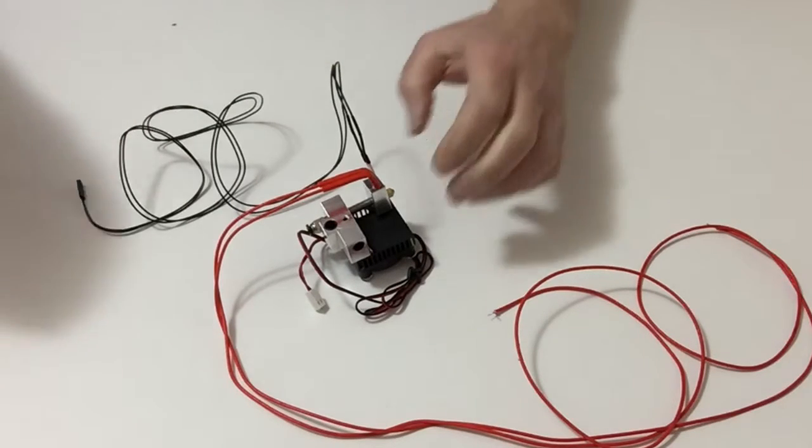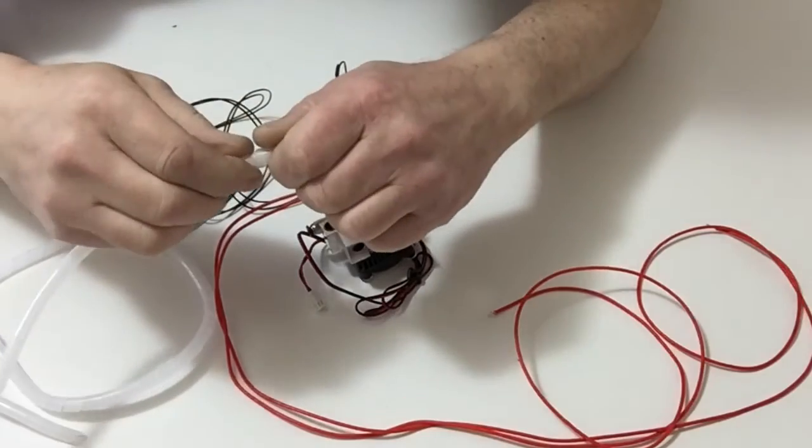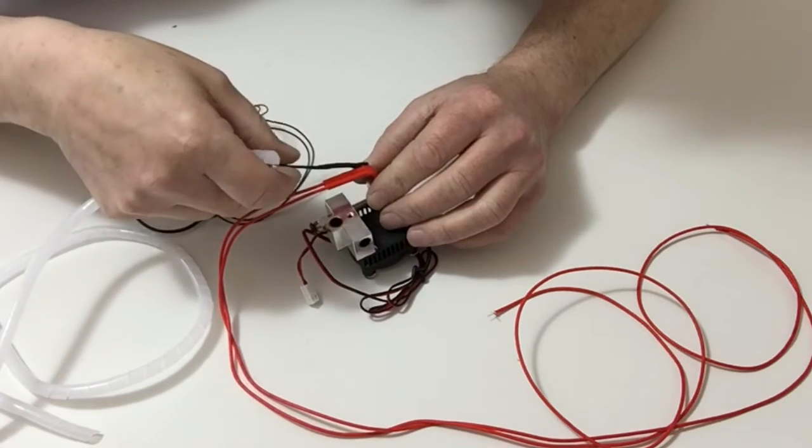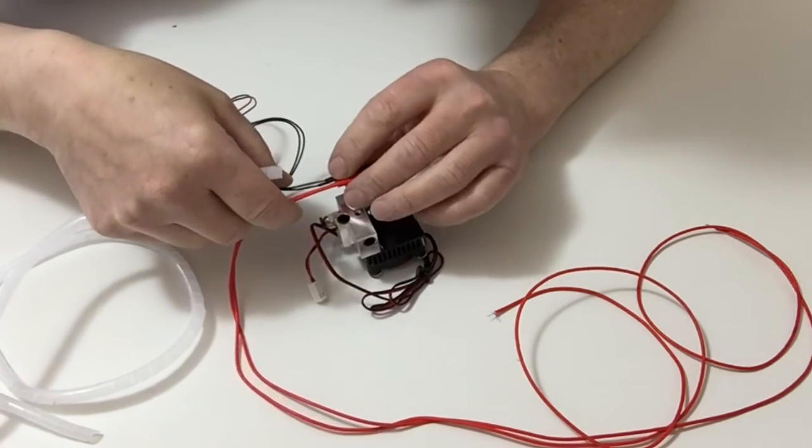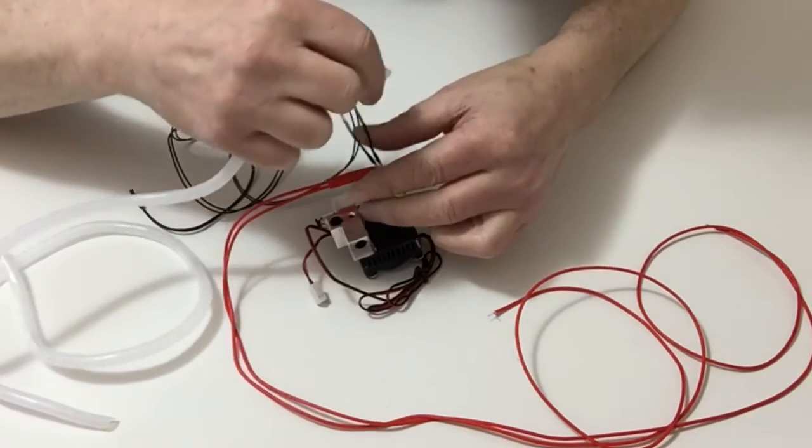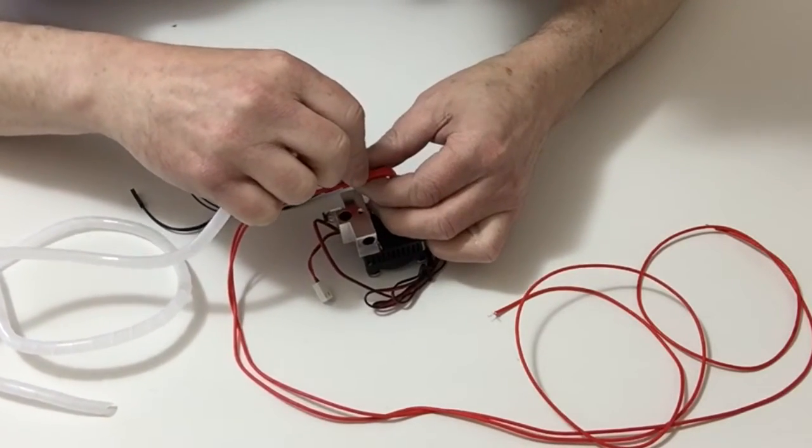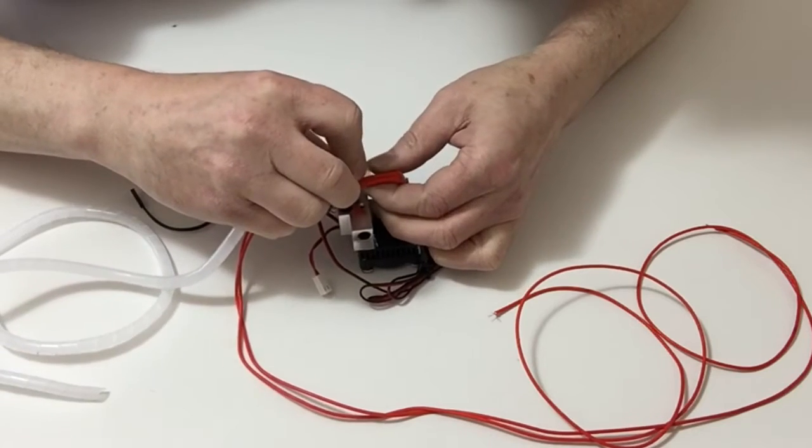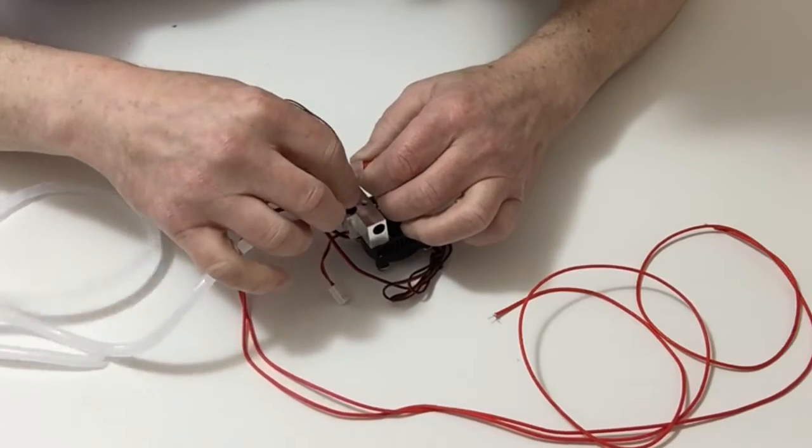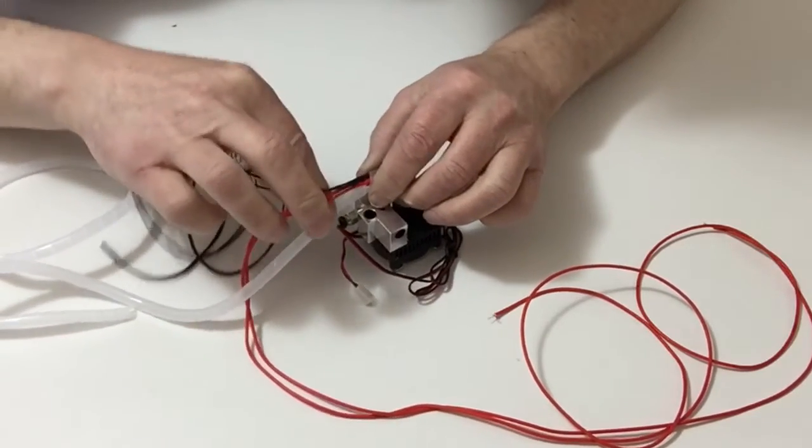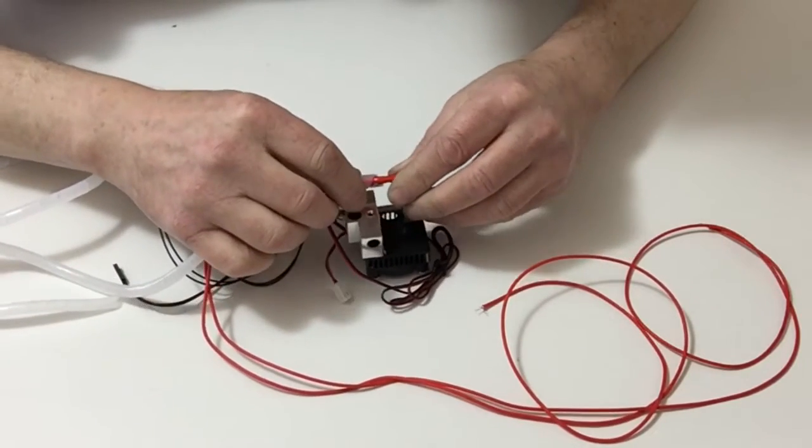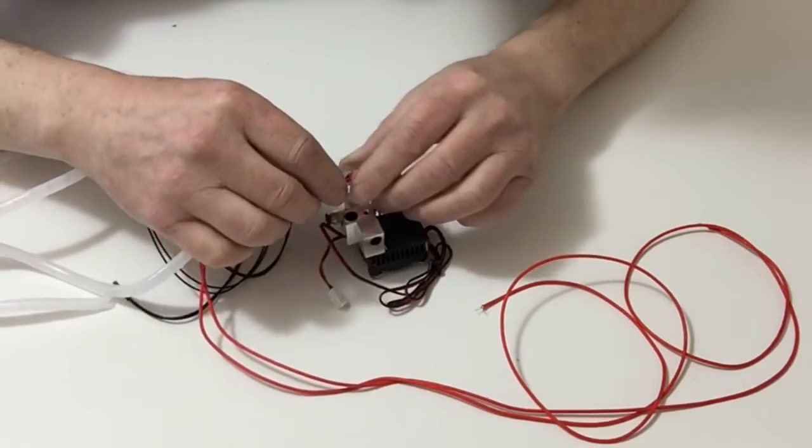Now take the tubing and cable tidy, carefully bend the thermistor over, and feed the cable over the two connections like so. Then continue to wind that around so that it protects the cables all the way along.